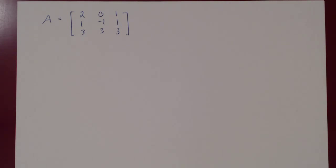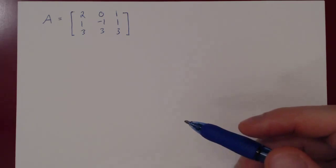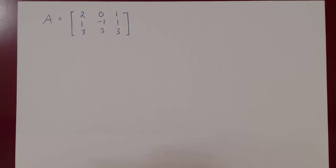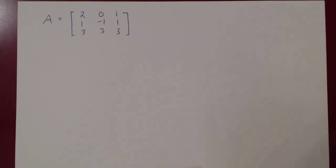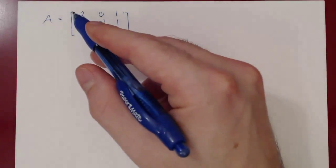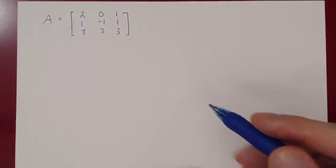In this video we will do an example of the adjoint formula in the case of a 3 by 3 matrix. As you'll see, all you need to do is find for each entry the corresponding cofactor. We'll start with building the cofactors for the first row.